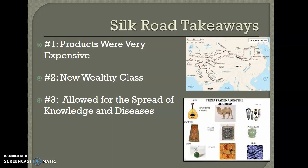Lastly, the Silk Road was super important in the spread of knowledge and diseases. Sometimes that knowledge was religion, but sometimes it was actual practical things — inventions. A lot of the inventions of China and India that might have otherwise stayed there, because of the increased rate of trade along the Silk Road, made their way to Europe and other parts of the Middle East and even North Africa. That leads to a compounding process of new knowledge. The other thing noted here is disease — and that's what we're going to get into, which is the Black Death.